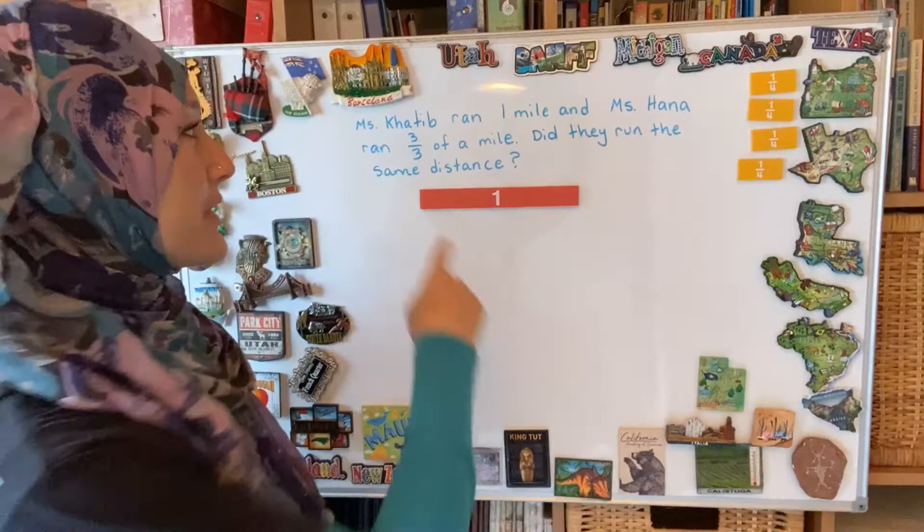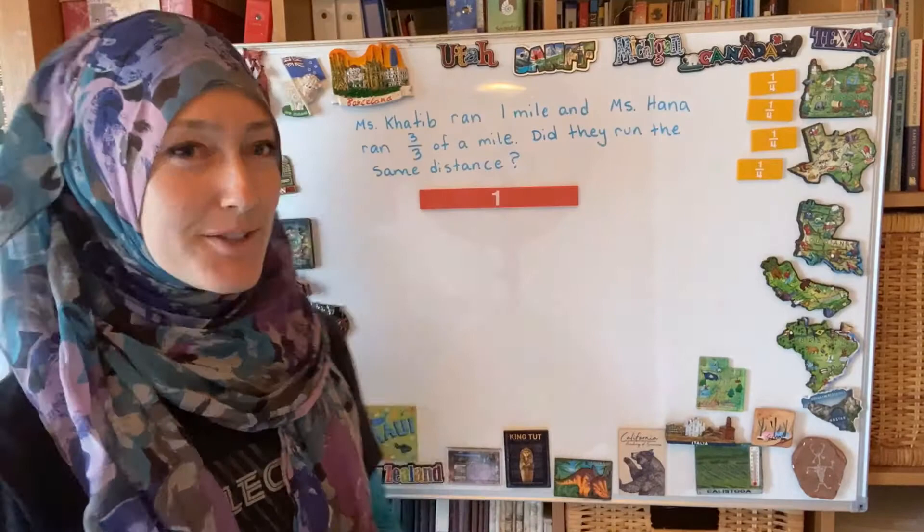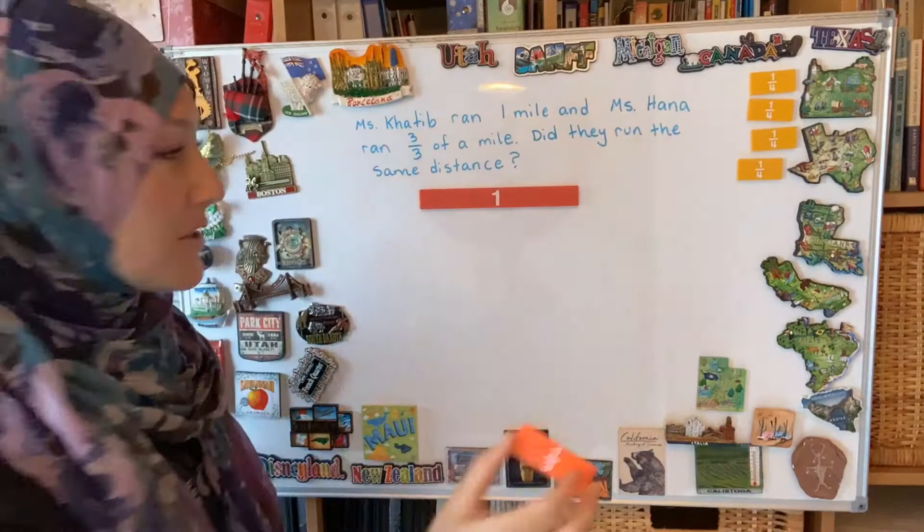This is lesson 8.6, relating fractions and whole numbers. The question is: I ran a mile and Ms. Hannah ran three-thirds of a mile — did we run the same amount? So if I have a one-mile to represent that, then I need to also model the one-third parts.